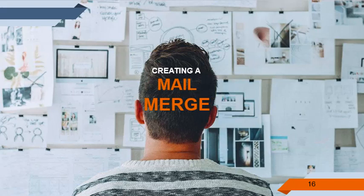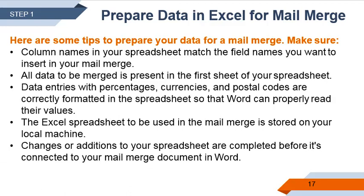So, how to create a mail merge? The first step is to prepare data in Excel for mail merge. Here are some tips: Make sure that the column names in your spreadsheet match the field names you want to insert in your mail merge. Second, all data to be merged is present in the first sheet of your spreadsheet. Third, data entries with percentages, currencies, and postal codes are correctly formatted so that Word can properly read their values. Fourth, the Excel spreadsheet to be used in the mail merge is stored on your local machine. And lastly, changes or additions to your spreadsheet are completed before it is connected to your mail merge document in Word.